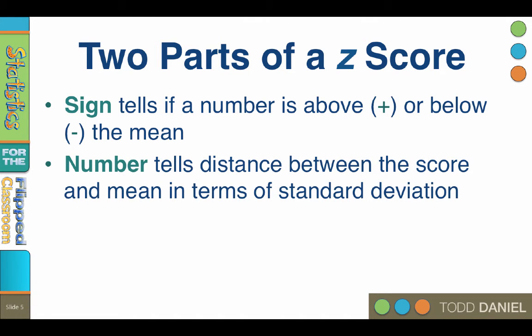Now the number tells us the distance between the score and the mean in terms of standard deviation. Regardless of the sign, the number indicates exactly the same distance. A score of z equals positive 1.23 is exactly as far above the mean as a z-score of negative 1.23 is below the mean.